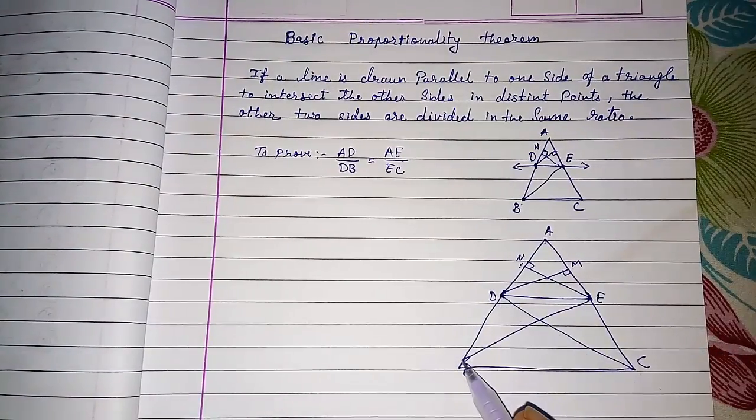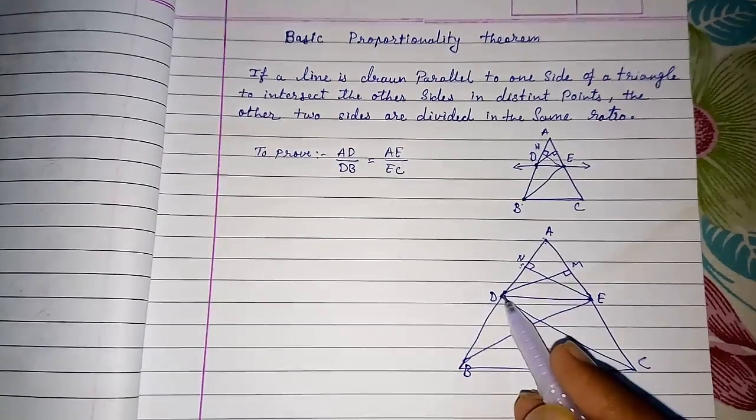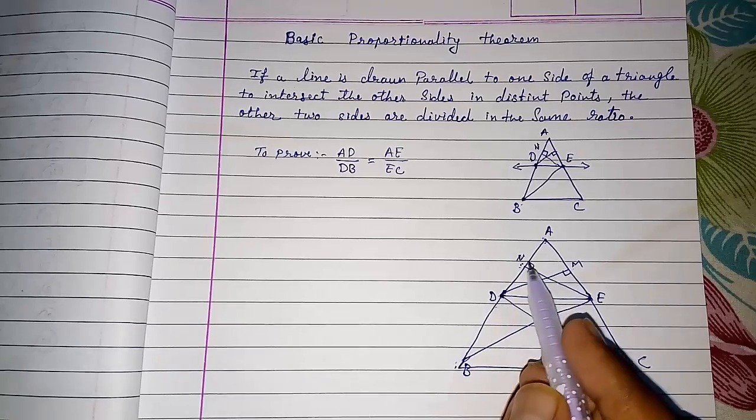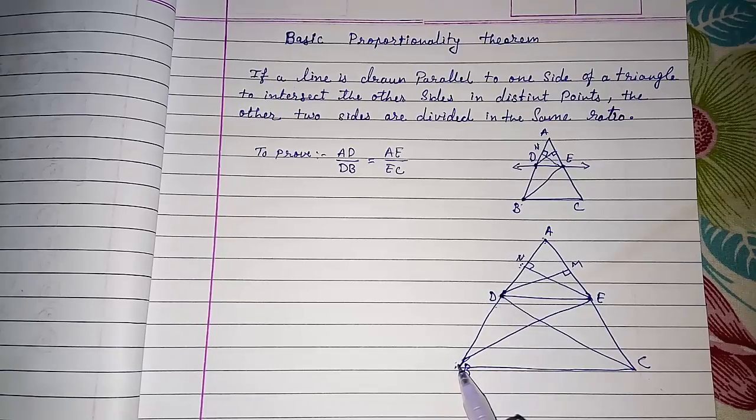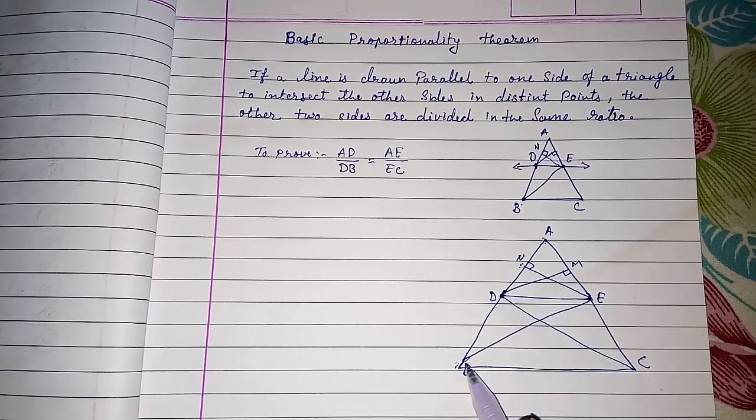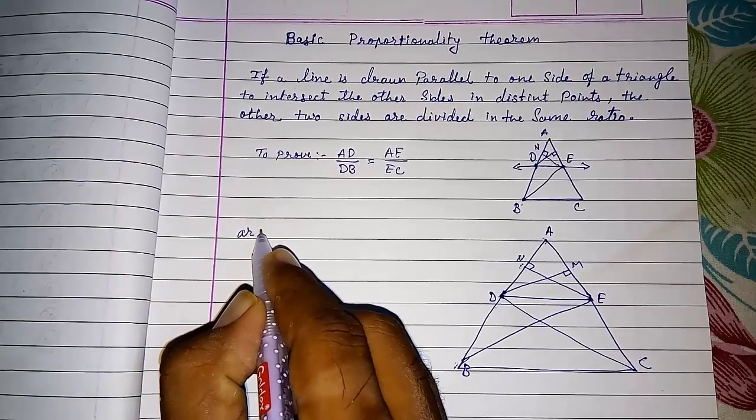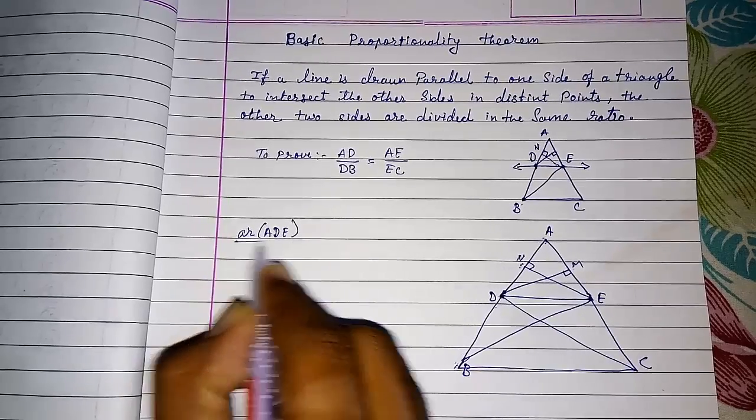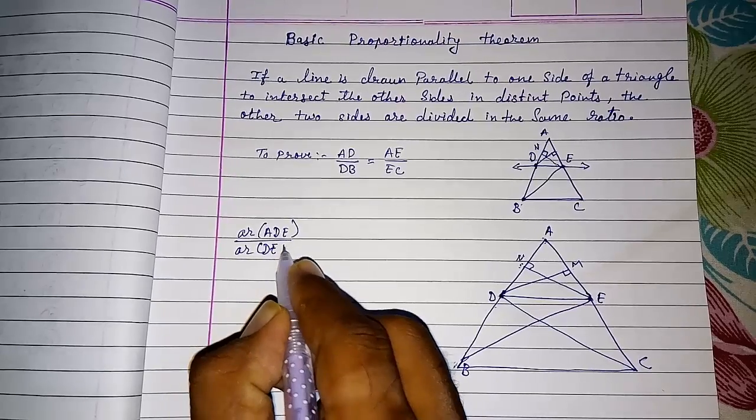So first we want AD upon DB. For AD and DB we need two triangles. Triangle ADE means ADE is in that triangle and DB will be in triangle DEB. So area of triangle ADE upon area of triangle DEB.